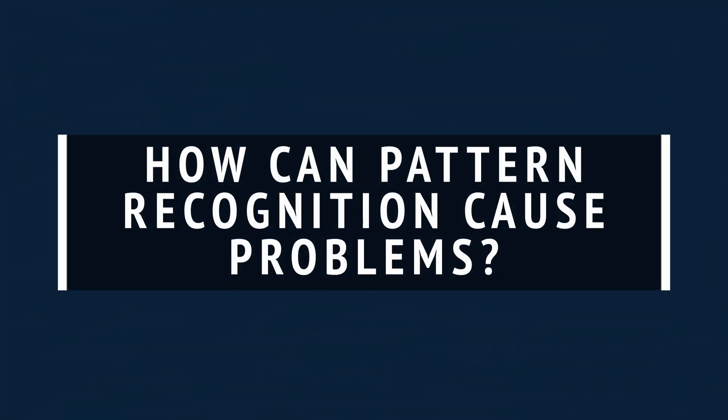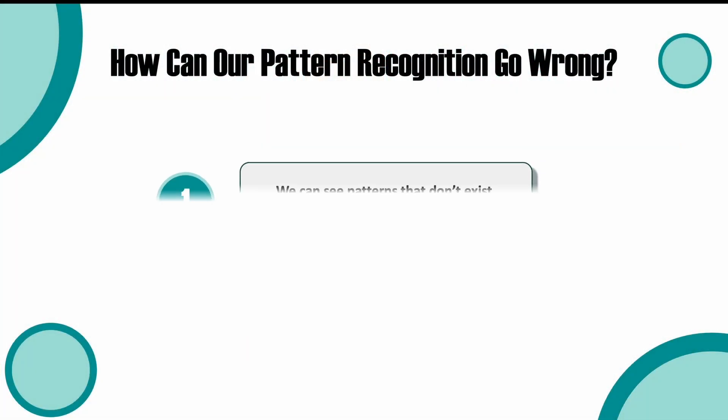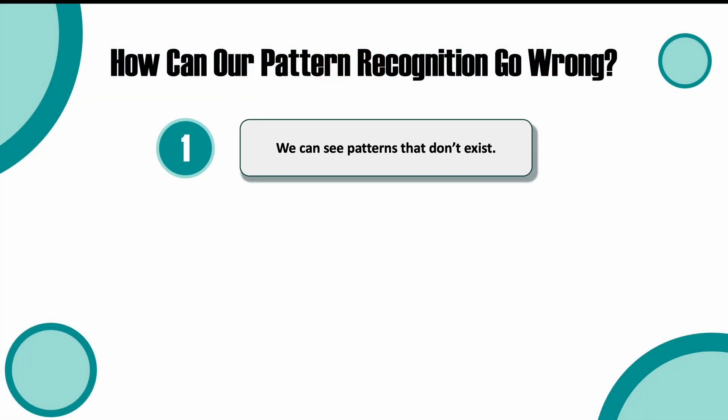Now you might be thinking, big deal, Luke. Who cares if sometimes I see a face in a cloud or an electrical outlet? But the consequences of our pattern recognition abilities can actually be quite damaging. So what are some of the ways that our pattern recognition can go wrong? Well, firstly, by making us see patterns that don't exist. Our drive to see patterns is so strong that it often leads us to see patterns in random noise that don't actually exist.